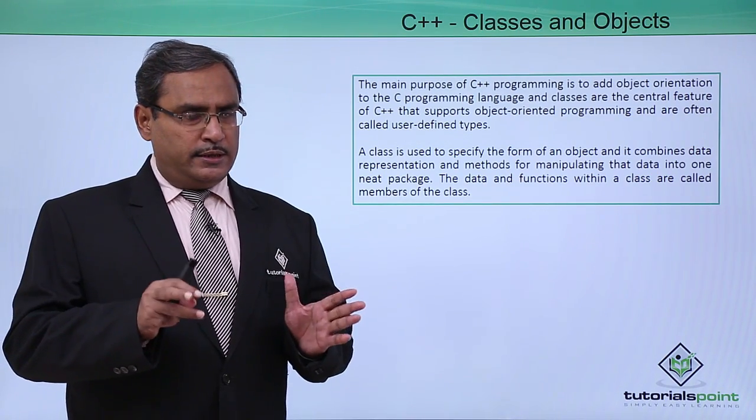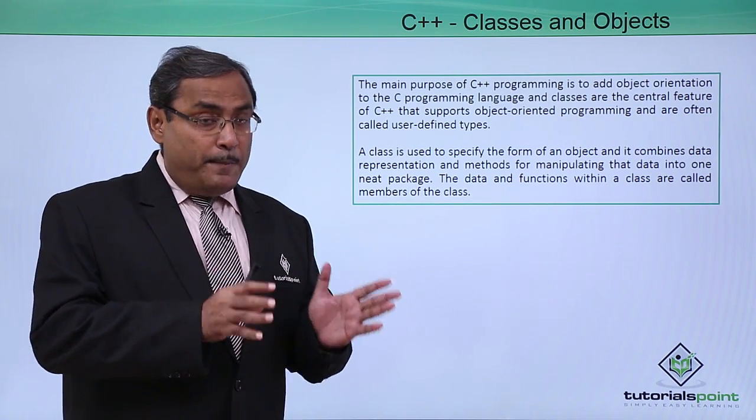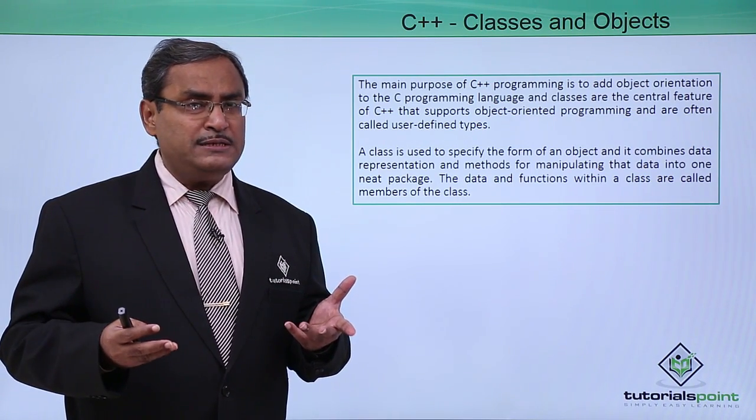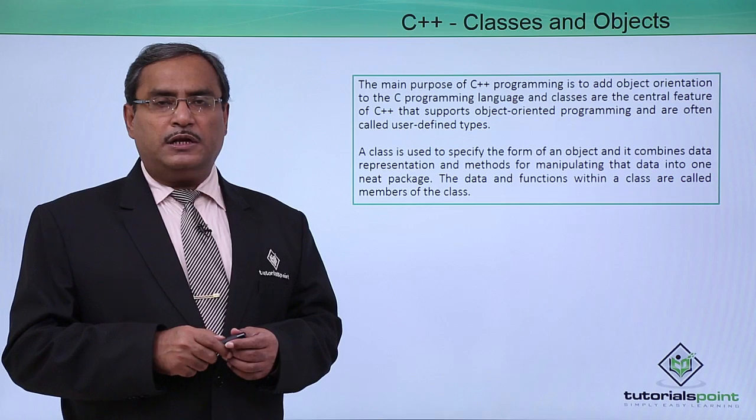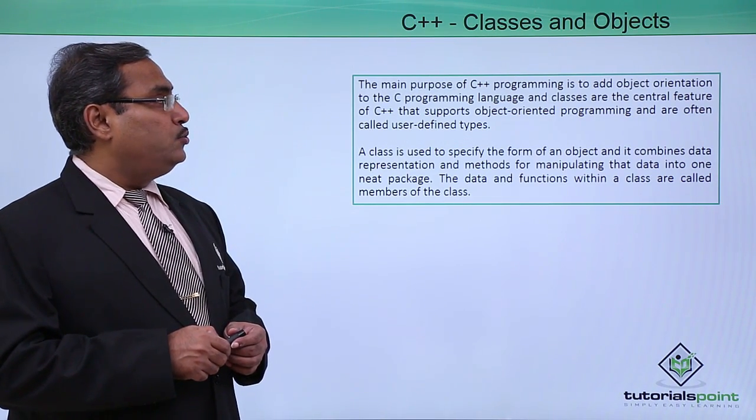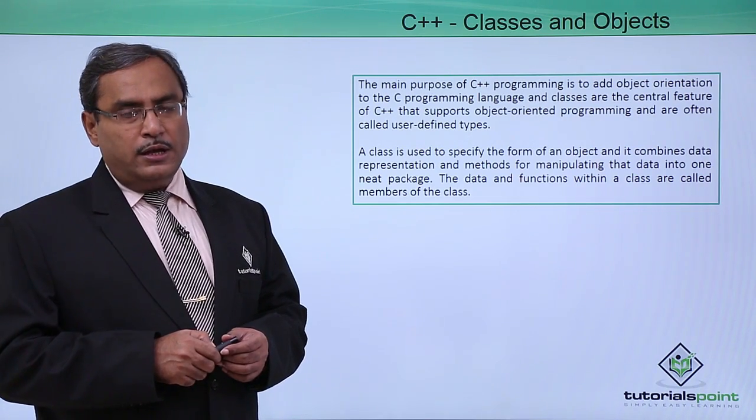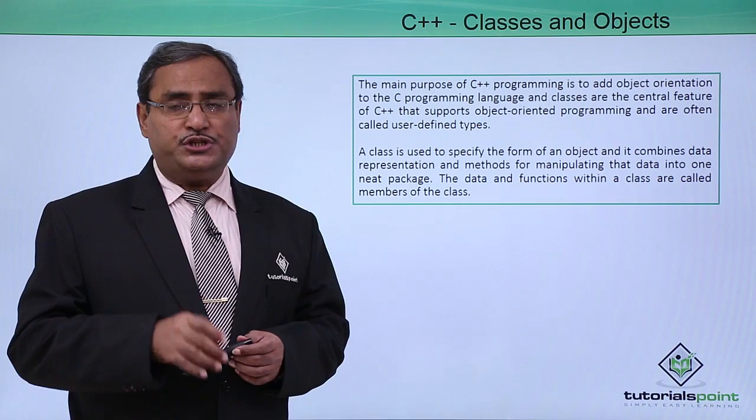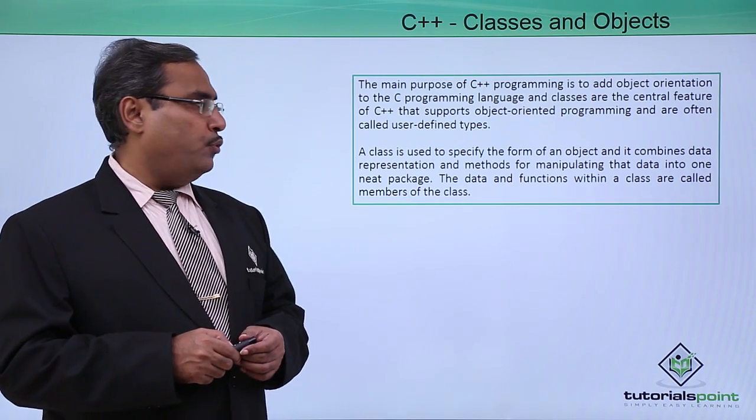C is there, C++ means better C. What is the betterment in C++? In C++ we can do object-oriented programming, and to do this we are supposed to define classes. Class is the very key feature of object-oriented programming.